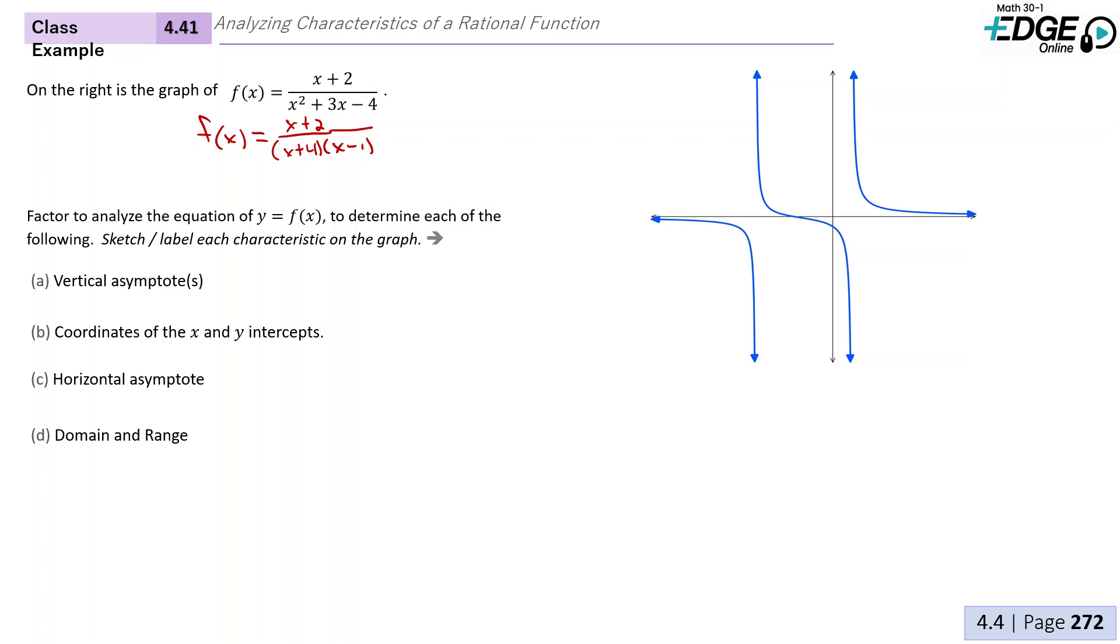Now that we're in factored form, we can easily see what our vertical asymptotes are. Our vertical asymptotes are going to be at x = -4 and x = 1.